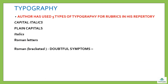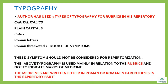If from 1/50th to 1/25th, the medicine is placed in the second rank. If from 1/75th to 1/50th, in the third rank. If below 1/75th, in the fourth rank (Roman letter). Clinical symptoms never rise above the fourth rank, and all doubtful symptoms are bracketed. The rank of medicine is decided according to the number of provers. The author used five types of typography for rubrics: capital italics, plain capitals, italics, Roman letters, and Roman bracketed (doubtful symptoms). These doubtful symptoms should not be considered for repertorization. The typography is used mainly in relation to rubrics and not to indicate the grade of medicine. The medicines are written either in Roman or Roman in parenthesis in the repertory.